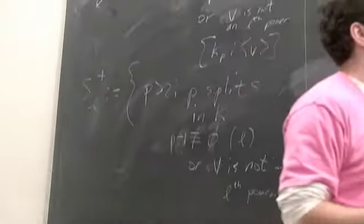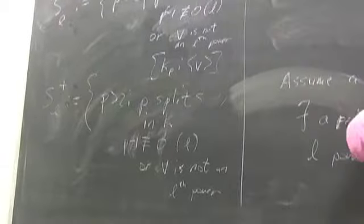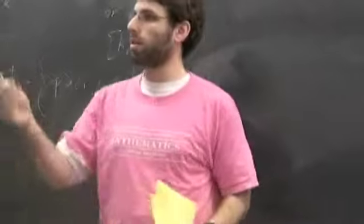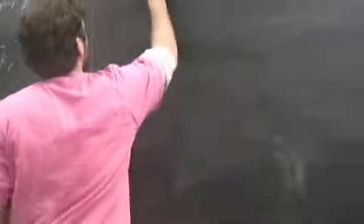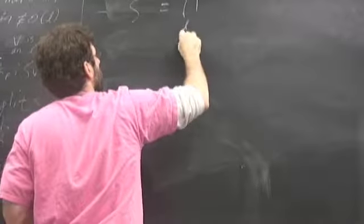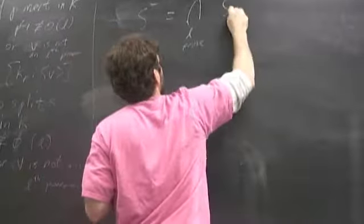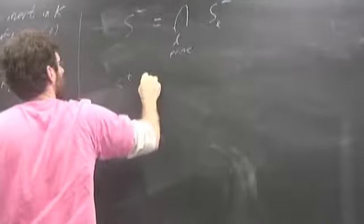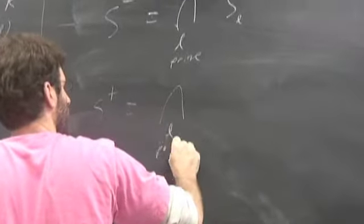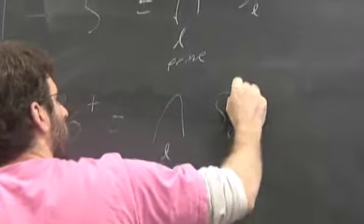right and so again just like before we're going to try and take the intersection of all of these groups of all of these collections these sets and the intersection is going to be the set of primes where this is a maximal element so we have S minus is the intersection of all L prime of S_L minus S plus same thing and